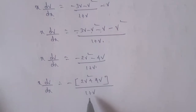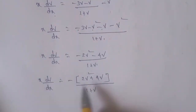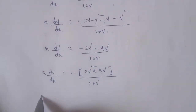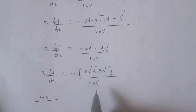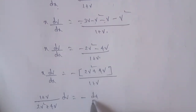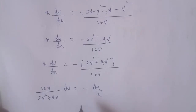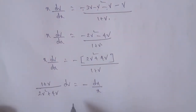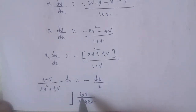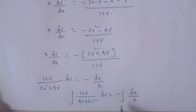Now separating variables: (1 + v)/(2v² + 4v) dv = −dx/x. Integrating both sides: ∫(1 + v)/(2v² + 4v) dv = −∫dx/x.